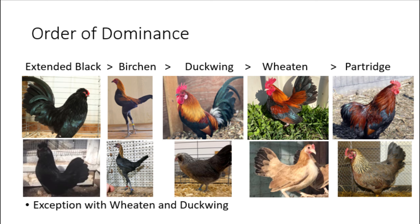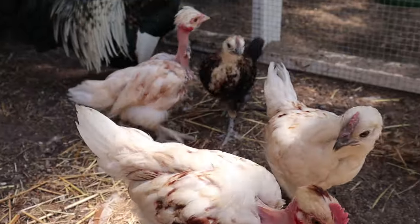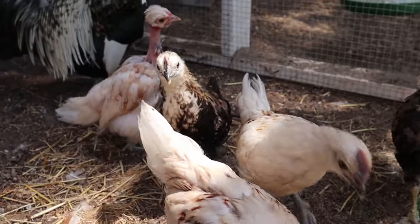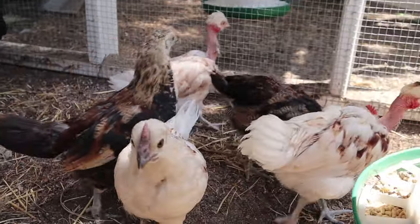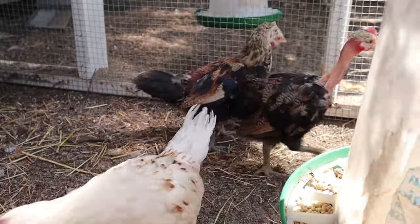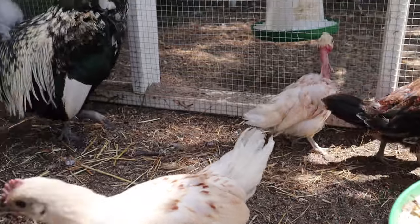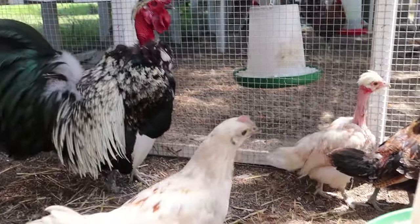Although there is technically an order of dominance, one of the hardest parts about understanding the E-Series is that the patterns don't always completely cover each other. Some interact by simple dominance, some by incomplete dominance, but overall crossing the patterns will usually result in loads of leakage, creating a genetic mess.